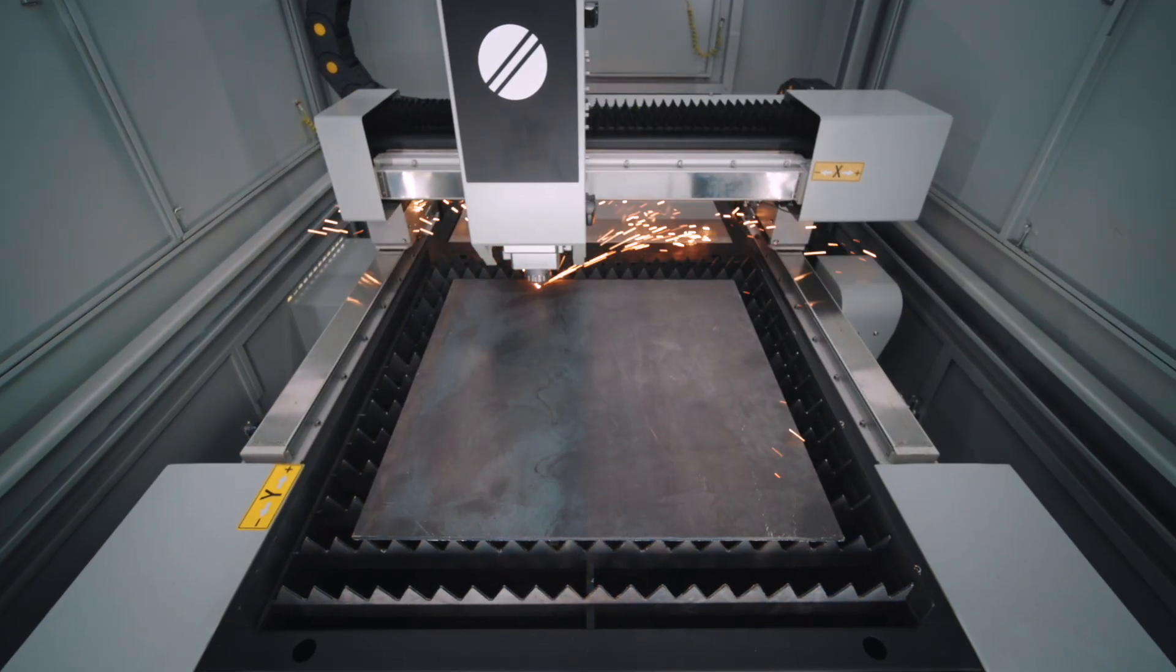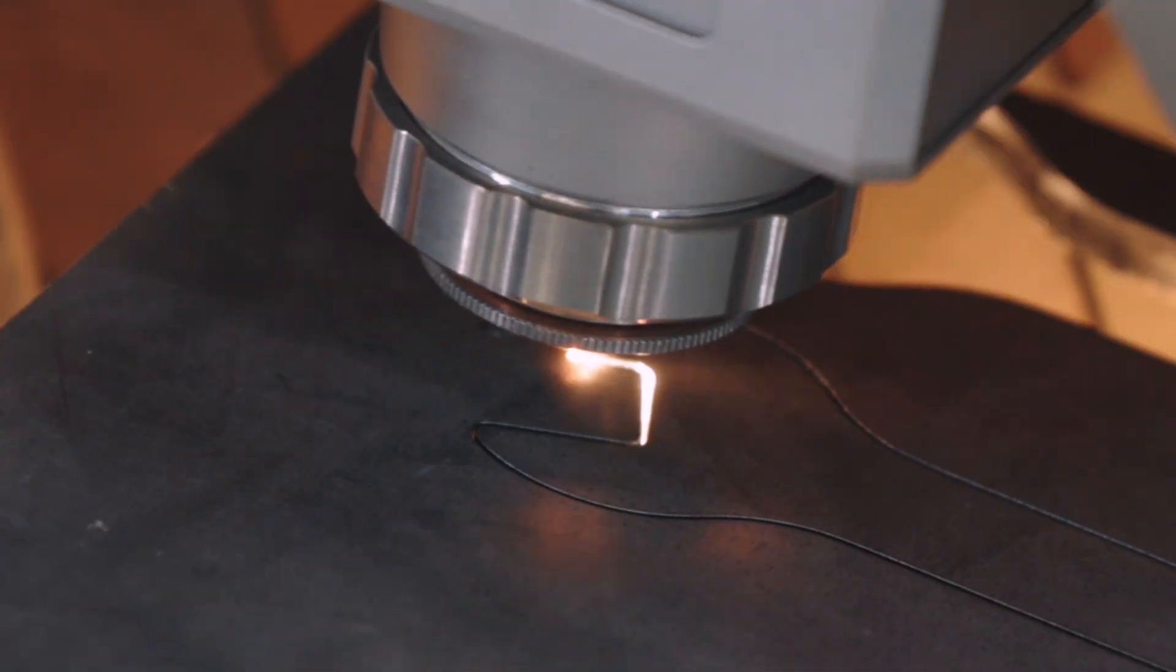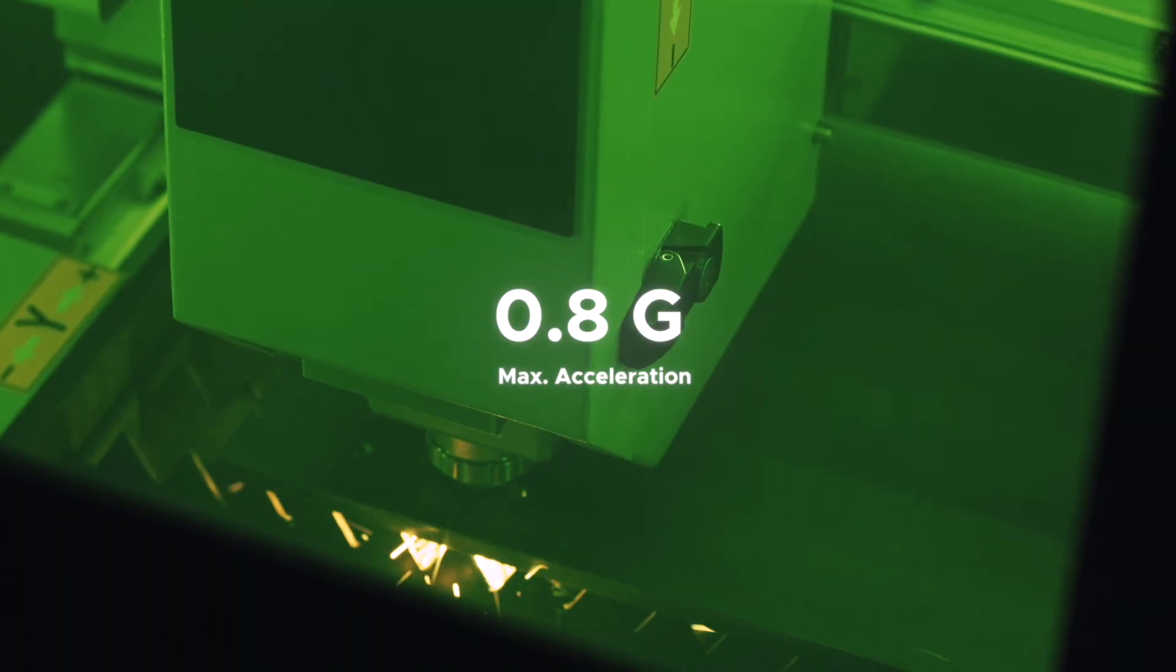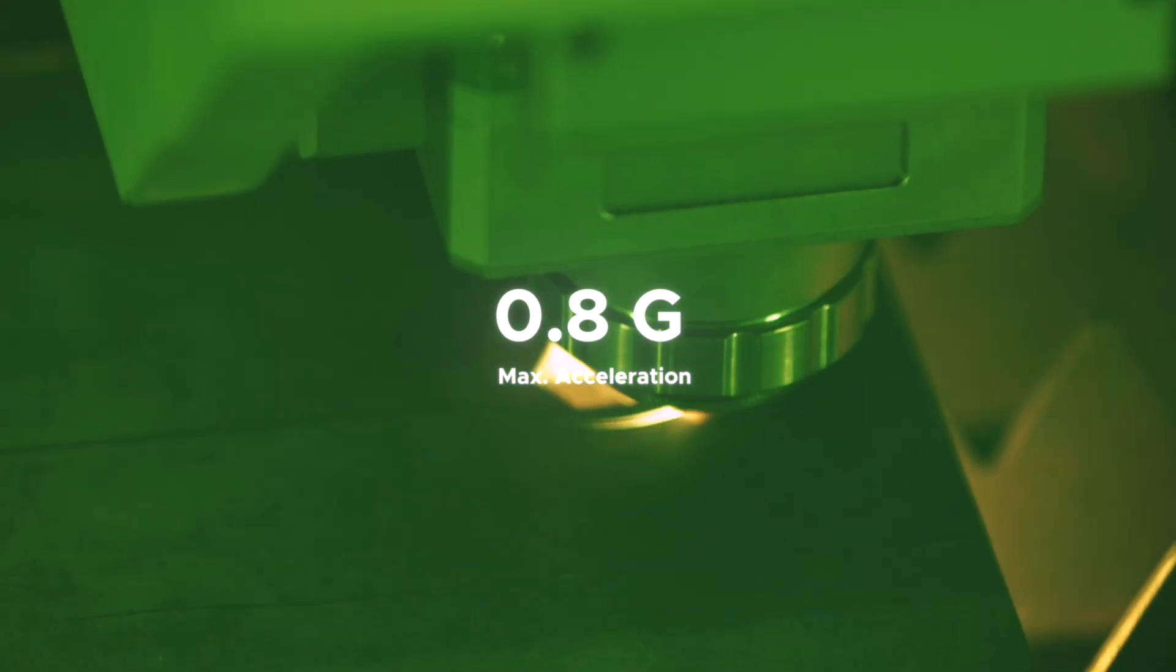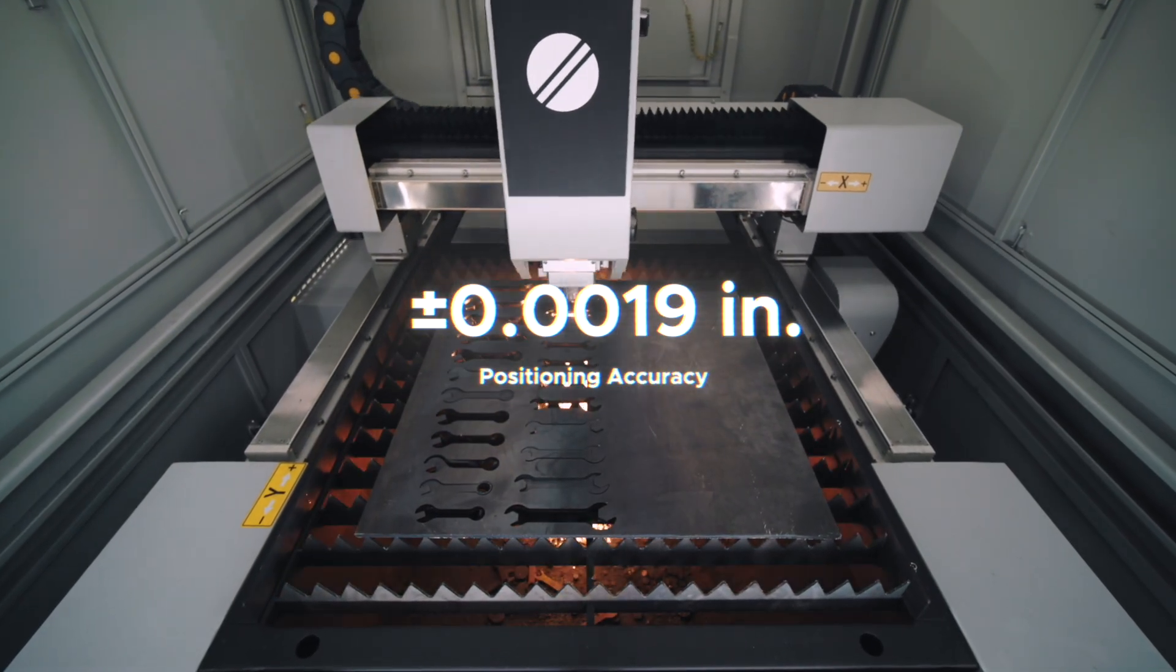FC22 outperforms its competition in every performance aspect. It works at a maximum cutting speed of 27.56 inches per second with a maximum acceleration of 0.8g and positioning accuracy within 0.0019 inches.